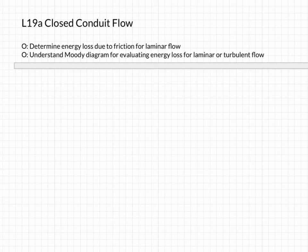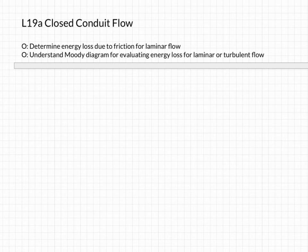Welcome to lesson 19, closed conduit flow. I don't really know why they call it closed conduit flow — it seems like they could have done that at any random point along this progression, but this is typically called closed conduit flow. What we're going to do here is we're going to start really analyzing head losses, talking about energy loss due to friction for laminar flow, and then start using the Moody diagram.